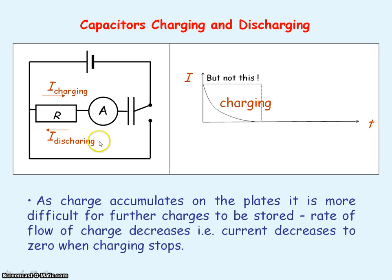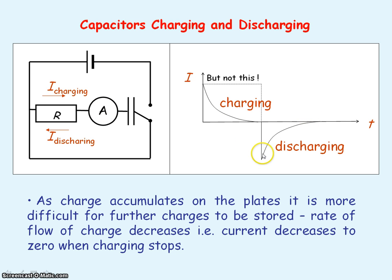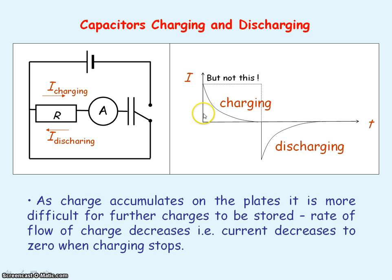If we now plot the current-time graph while the capacitor is discharging, the current is in the opposite direction to the current while the capacitor was charging, and again it follows an exponential shape. From AS, the area under a current-time graph represents the charge flowing — in this case, the charge stored on the capacitor. The area under the charging current-time graph is equal to the area under the discharging graph, so the same charge stored while charging is the same amount of charge lost while discharging.